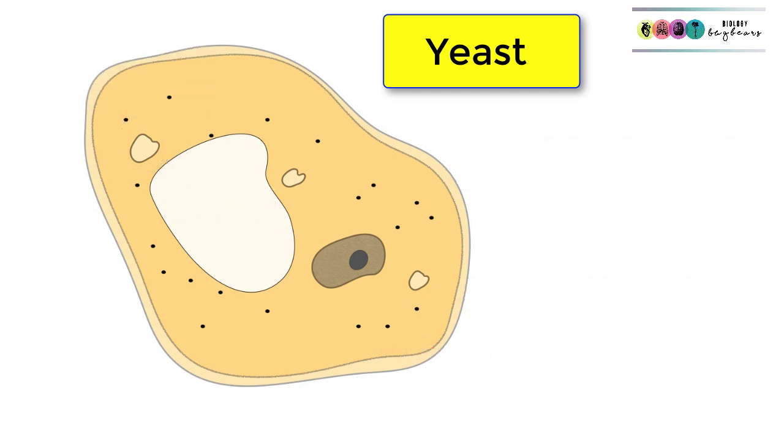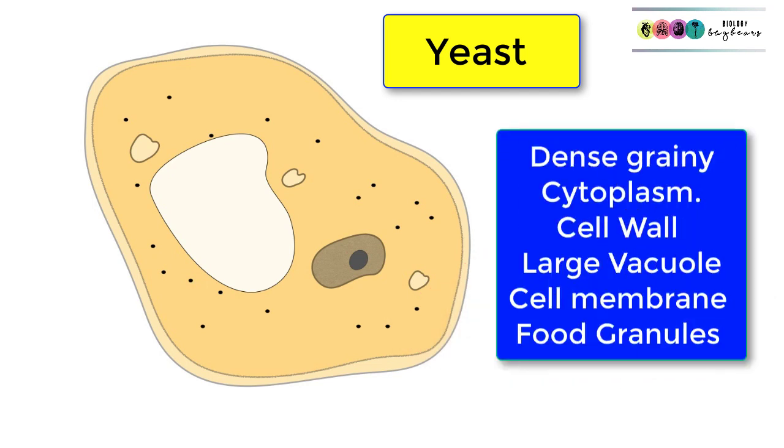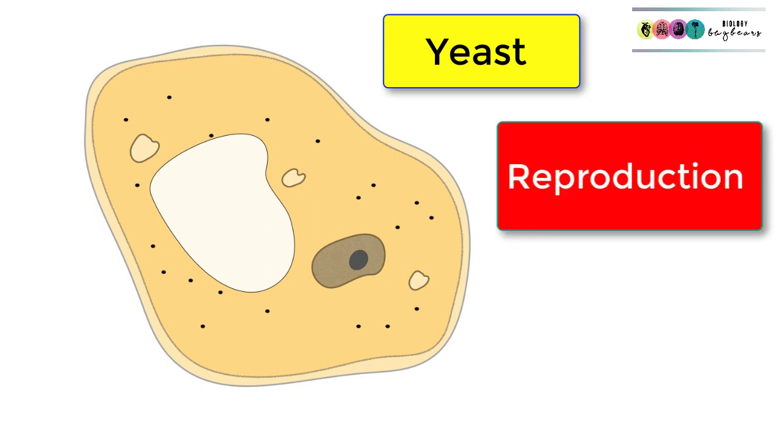To help you in your exams, I would highly recommend you look at some photographs, real photographs, of what yeast cells look like under a microscope because you never know you might be presented with one of those in your paper. Be able to recognize dense grainy cytoplasm, the cell wall, the large vacuole, the cell membrane and those food granules or food vacuoles.